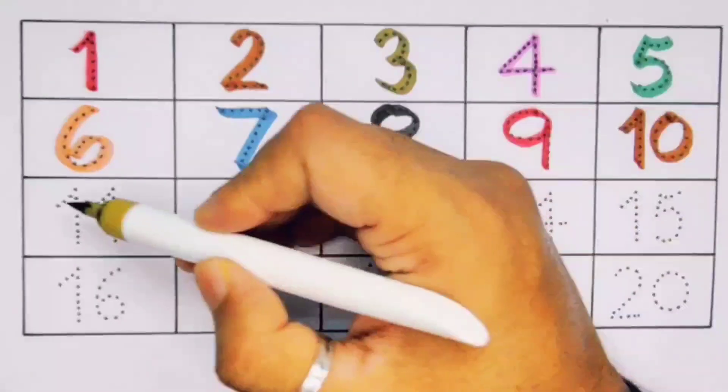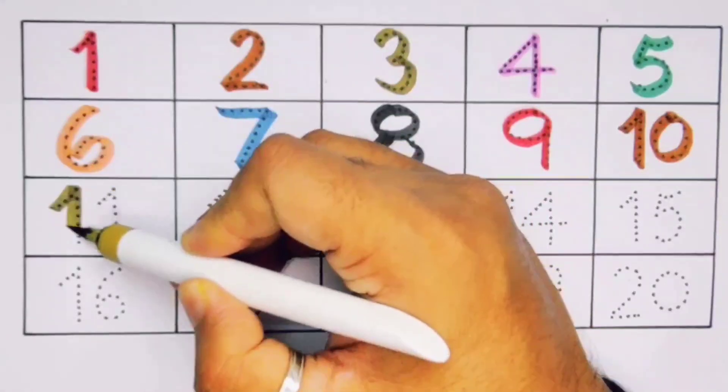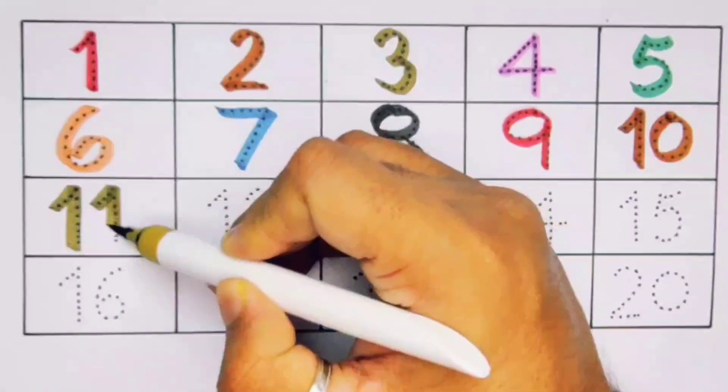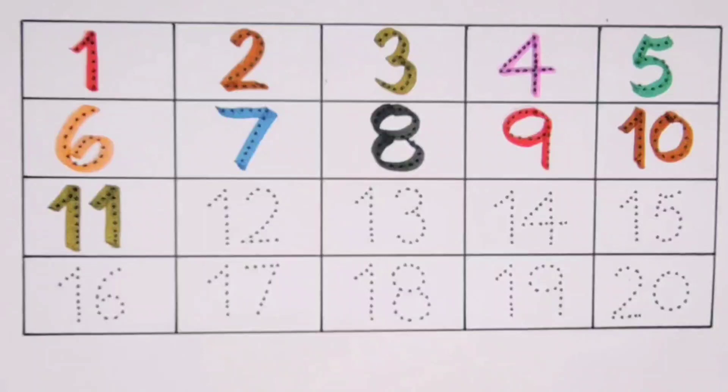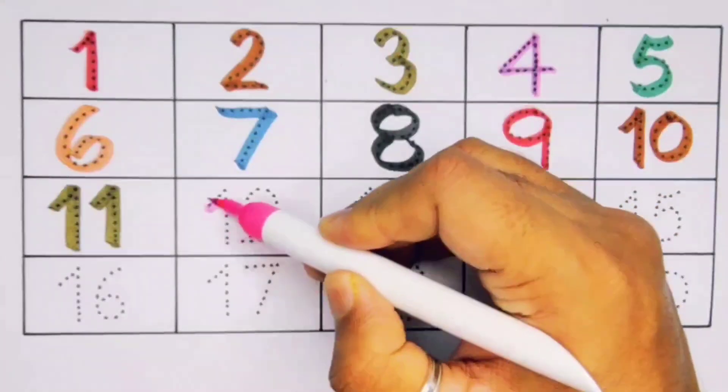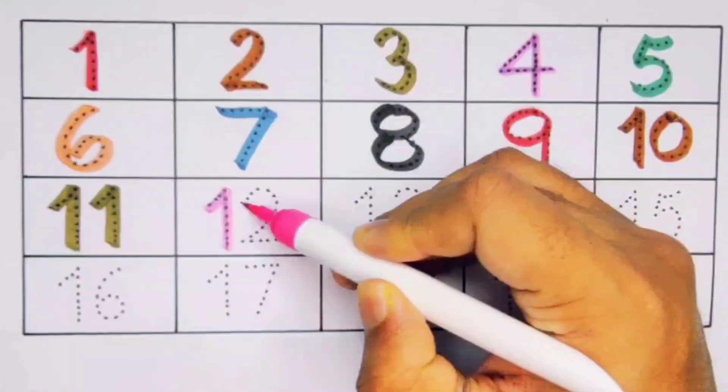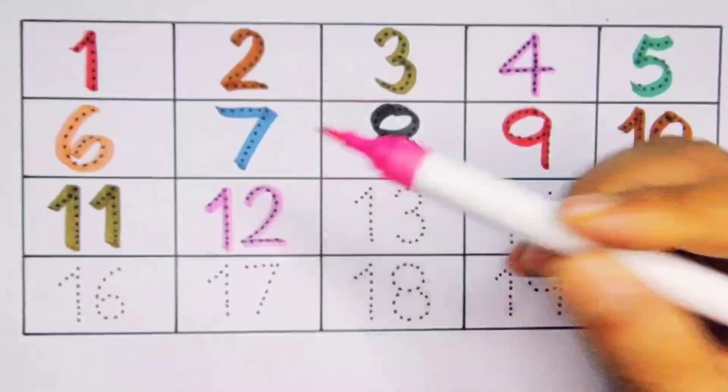Next kids, it's 11. 1, 1, 11. Number 11. Next 12. 1, 2, 12. Number 12.